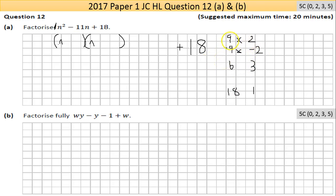You're looking at which of those factor pairs would add to give minus 11. Plus nine plus two is plus 11, so that's out. Minus nine plus minus two gives you minus 11 — that's it. Minus six and minus three multiply to give plus 18, but they can't add to give minus 11. Same with 18 and one. So minus nine and minus two are your two factors.